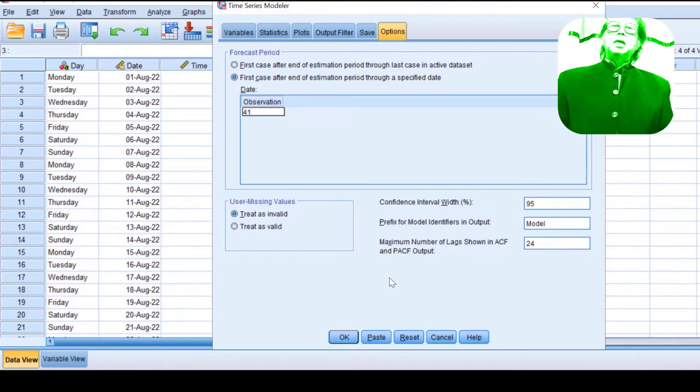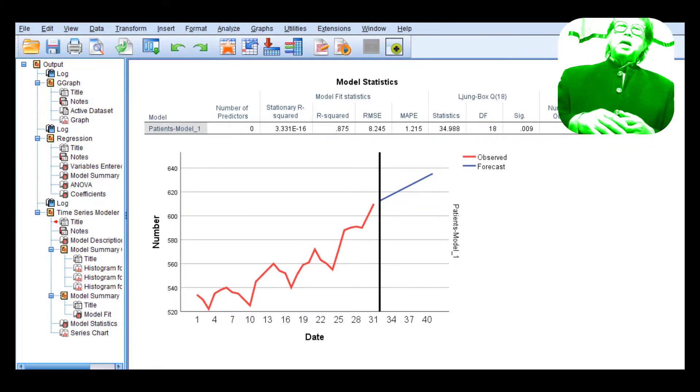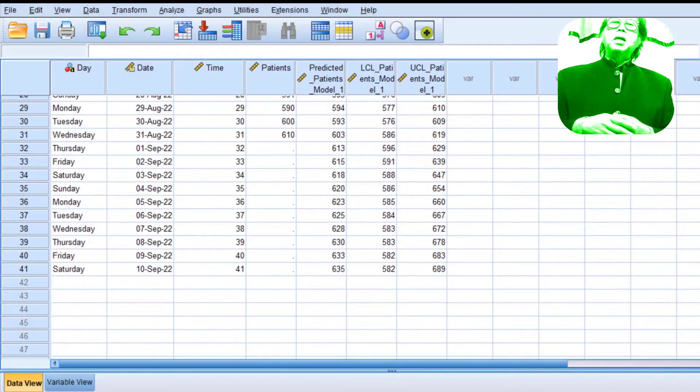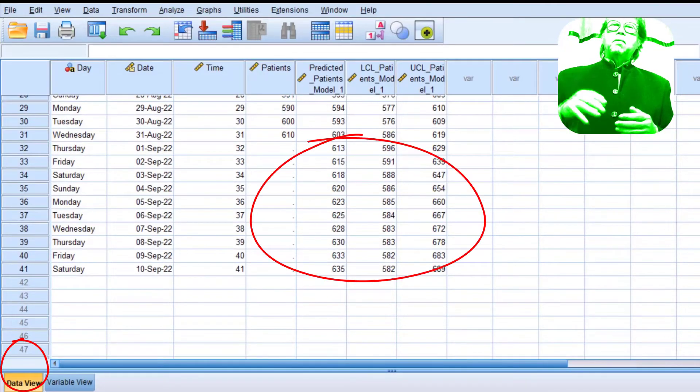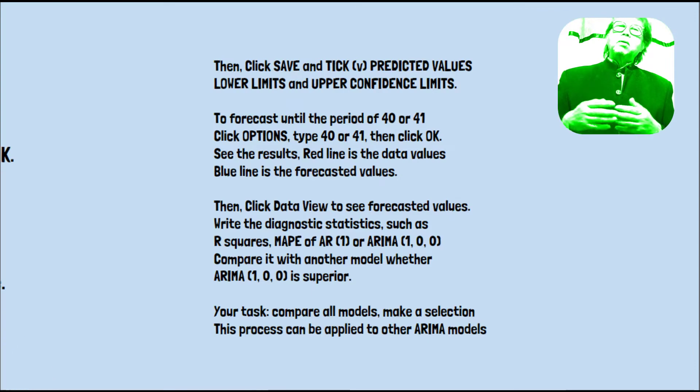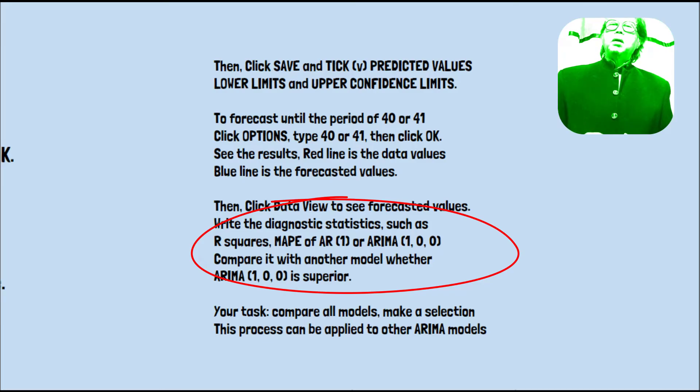So you can see the forecasting result. If you see, the red line in the data is the value, then blue line is the forecasted value. Then you need to click the data again to see the forecasted value. You need to write down the diagnostic statistics such as R2, Mean Average Prediction Error of ARIMA Model 1, and compare with other ARIMA models.